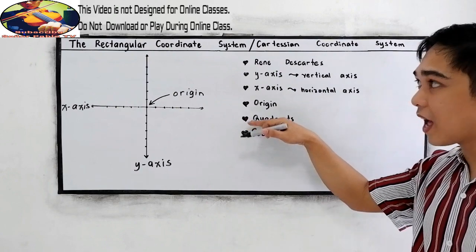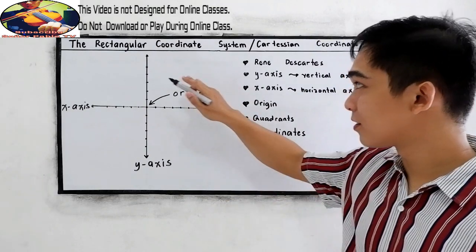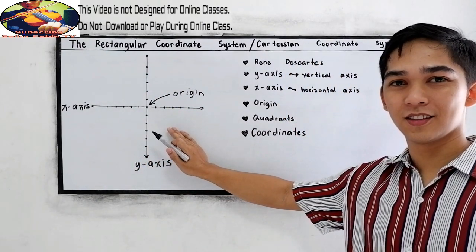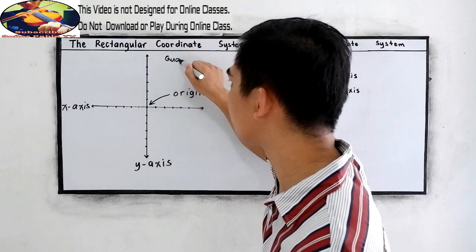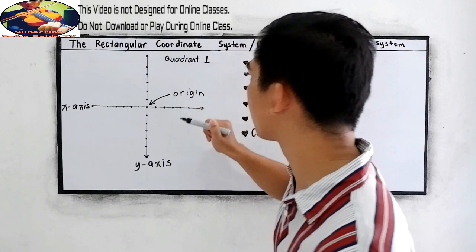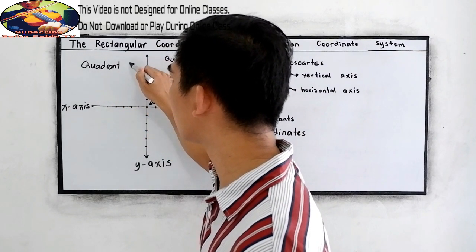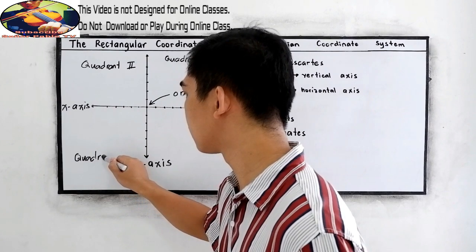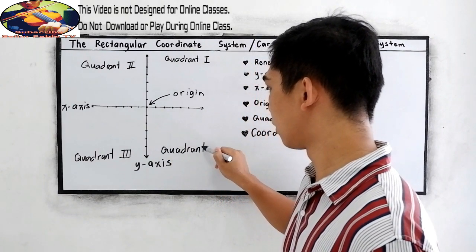Next, we have the quadrants. Notice that our Rectangular Coordinate System is divided into 4: Quadrant 1, Quadrant 2, Quadrant 3, and Quadrant 4. They are named counterclockwise. So we have Quadrant 1, Quadrant 2, Quadrant 3, and Quadrant 4.